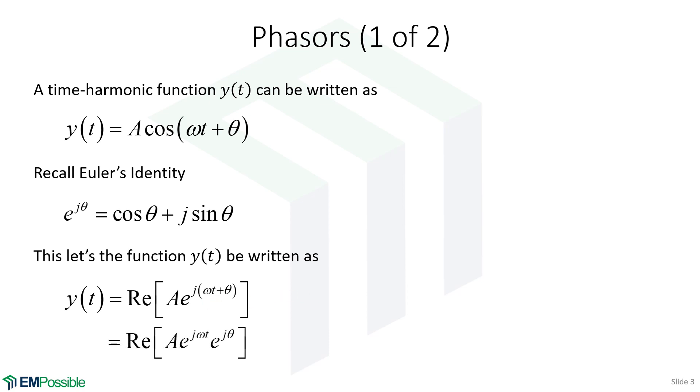The last thing we'll do here is expand this complex exponential. So we have E to the j omega t, and then E to the j theta.